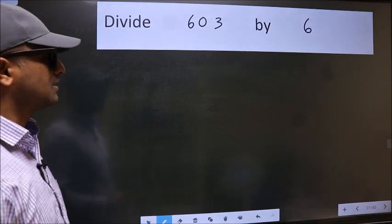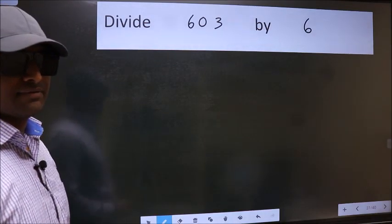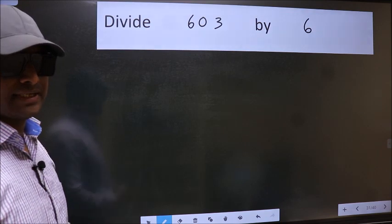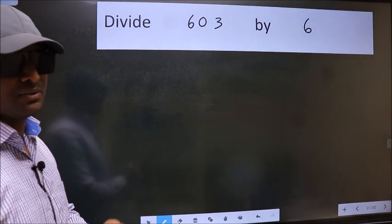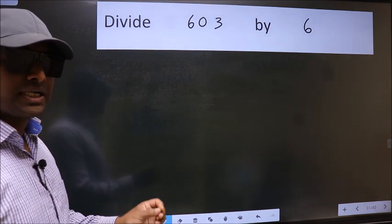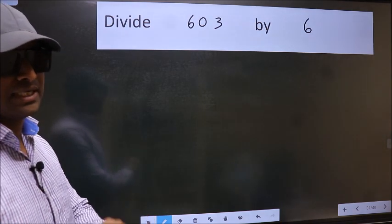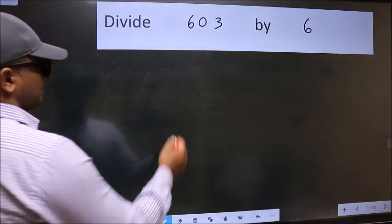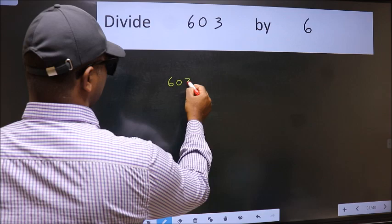Divide 603 by 6. While doing this division, many do this mistake. What is the mistake that they do? I will let you know, but before that we should frame it in this way: 603 divided by 6.